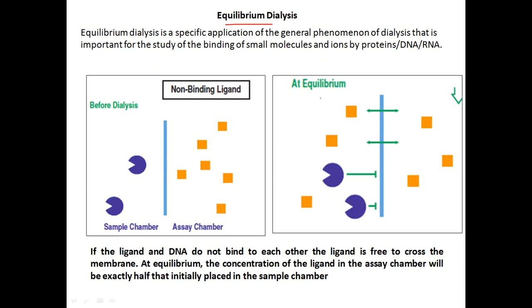Equilibrium dialysis is a specific application of the general phenomenon of dialysis and is important for studying the binding of small molecules to larger macromolecules like proteins, RNA, or DNA. To determine if a molecule binds to DNA, two chambers separated by a semi-permeable membrane are used — one chamber contains the ligand and the other contains the macromolecule such as protein or DNA.